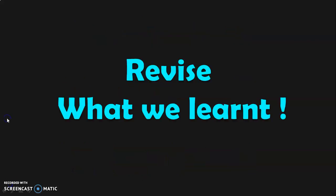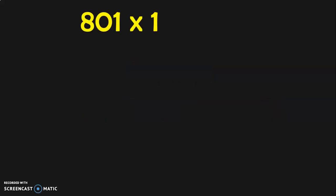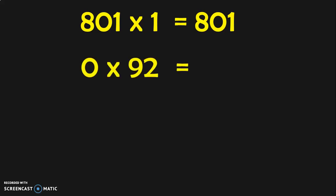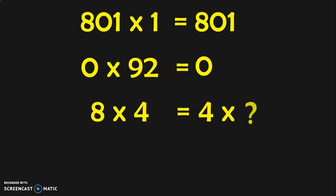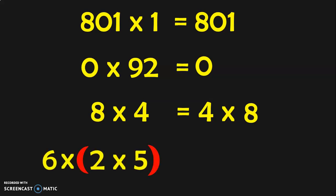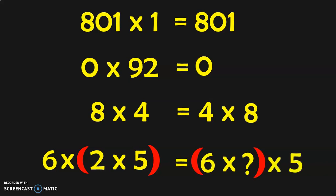Let us quickly revise all the properties of multiplication. 801 into 1 is equal to 801 — when you multiply any number by 1, you get the same number. 0 into 92 is equal to 0. 8 into 4 is equal to 4 into 8, which is 32 — when two numbers are multiplied in any order, you get the same answer. 6 into 2 into 5 is equal to 6 into 2 into 5 — three numbers when multiplied can be grouped in any order and the answer will remain the same.